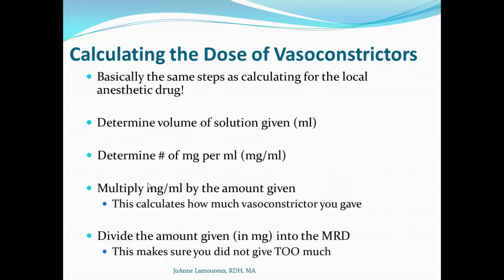To calculate vasoconstrictor dosage, we use the exact same steps as for the local anesthetic. We need to know the volume in milliliters given, then how many milligrams are in each milliliter, multiply those two numbers to get total milligrams of vasoconstrictor given. To calculate how many cartridges before reaching the MRD, we determine how much vasoconstrictor is in each cartridge and divide that into the MRD for that vasoconstrictor.